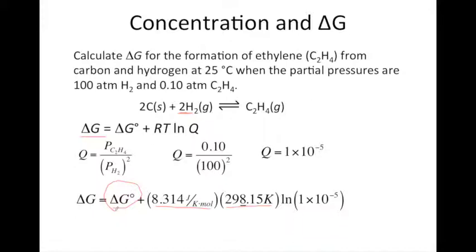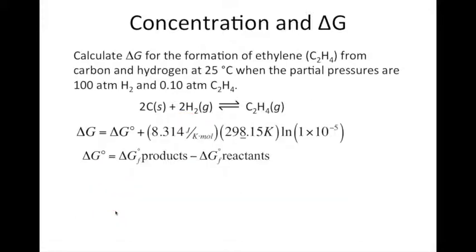Well, as we mentioned before, there are a couple of ways that we can calculate delta G standard. Here, we would want to use the free energies of formation to calculate delta G standard. So our delta G standard can be calculated using the free energy of formation of our products minus those of our reactants.